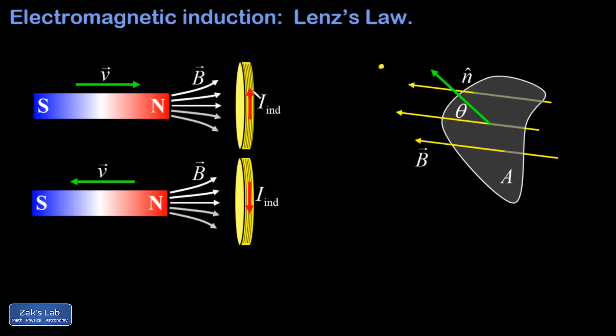The reason the current is induced in this direction is because the loop has been exposed to new flux pointing rightward through the loop. So the current is induced in the direction that will reduce that change. In other words, the direction that creates leftward magnetic field lines coming through the loop.